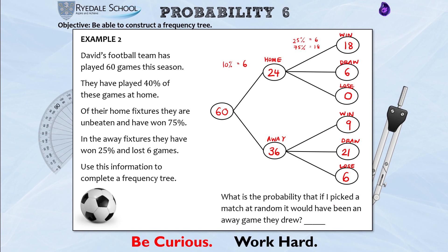We're now in a position to answer the probability question: what is the probability that if I picked a match at random it would have been an away game they drew? That is 21 out of 60. Both numbers are in the three times table, so this cancels to 7/20.